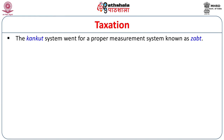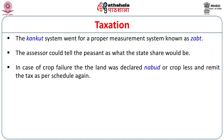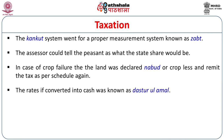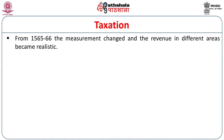The Kankut system then moved toward a proper measurement system, which came to be called Zabt. The assessor could tell the peasant what the state's share would be. In case of crop failure, the land was declared Nabud or cropless, and remit the tax as per schedule. The rates if converted into cash were called Dastur ul-Amal. In 1565–66, measurement changed and the revenue in different areas became more realistic.